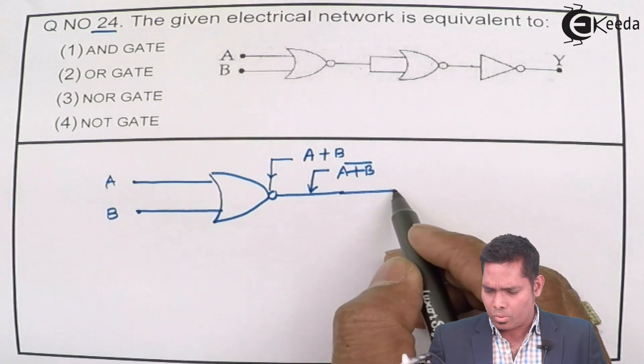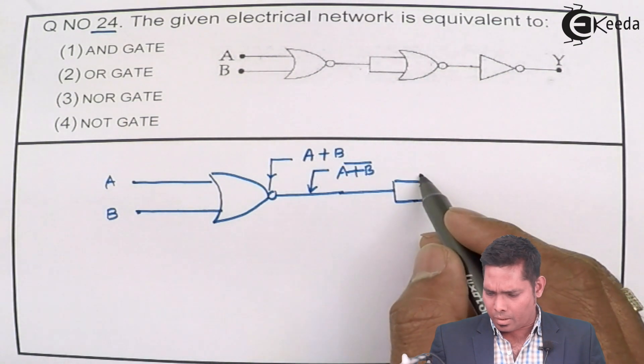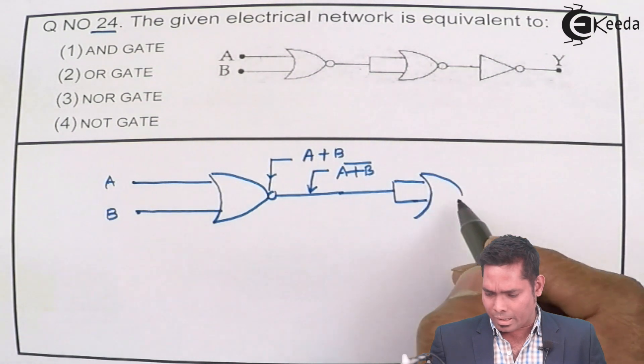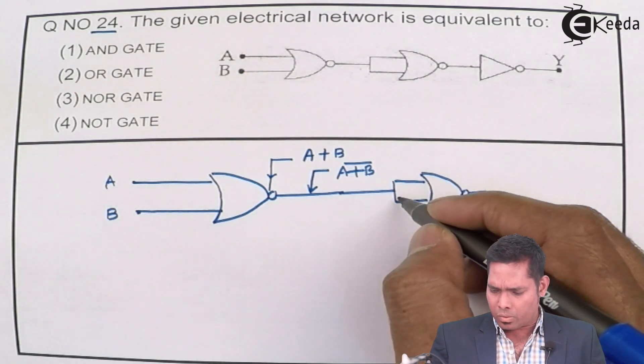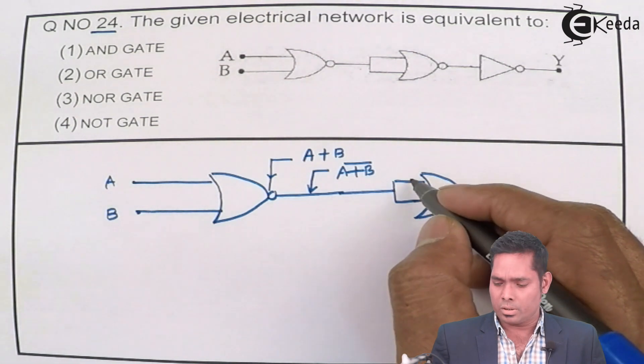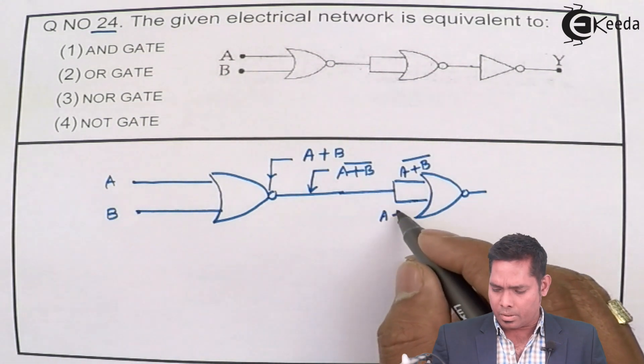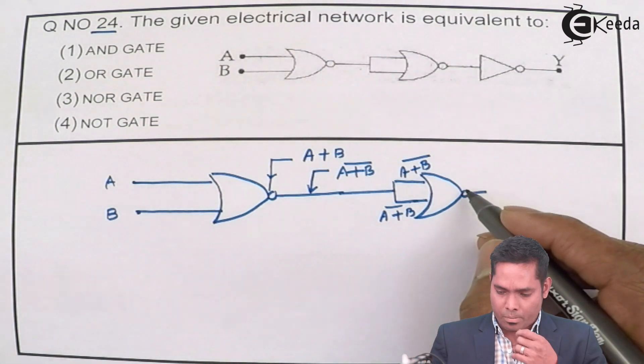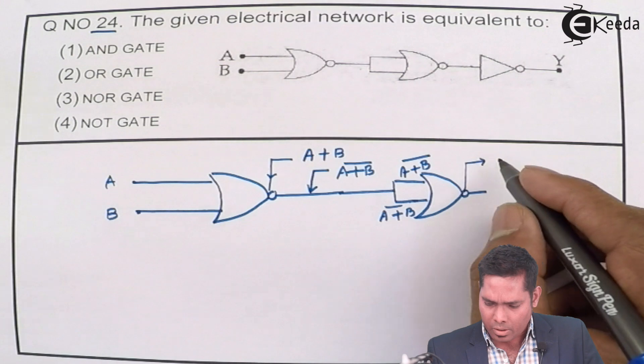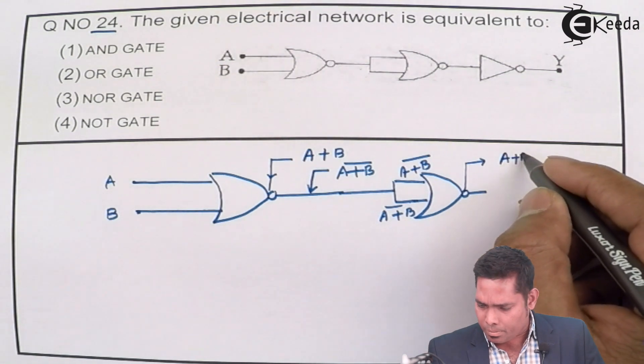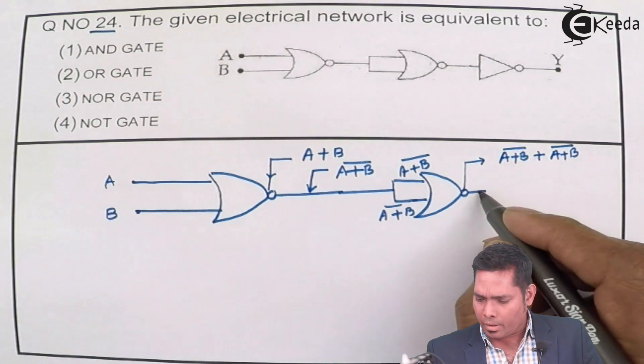And this goes to again a NOR gate, so here also A plus B bar and here also A plus B bar. The same input is given to both this. This is A plus B bar and this is A plus B bar, and when it comes out from here, this one here I will get A plus B bar plus A plus B bar and here I will get A plus B bar.